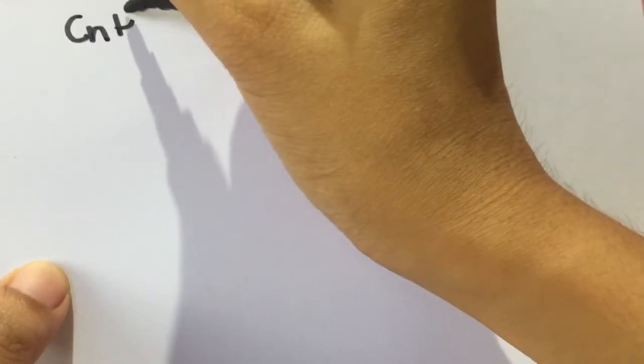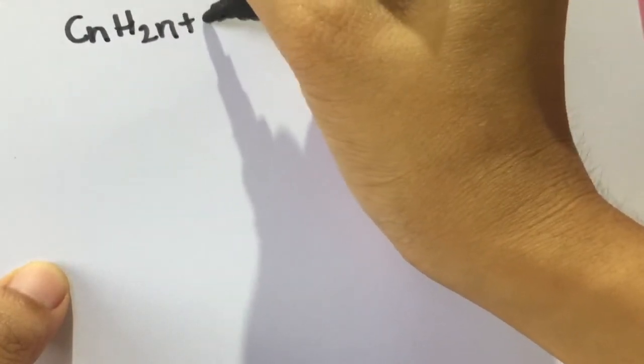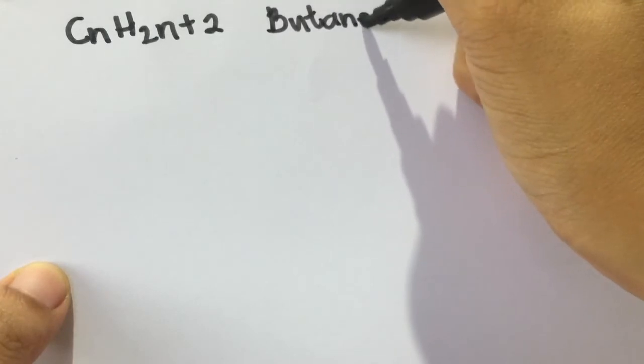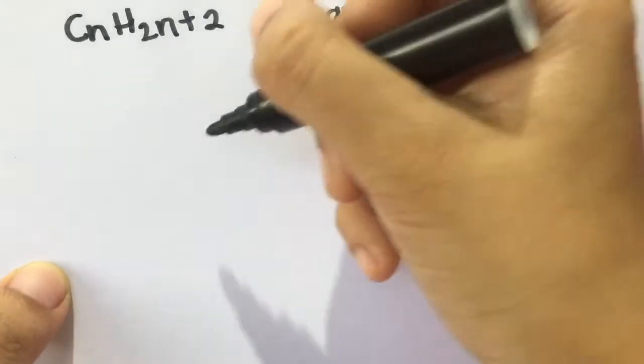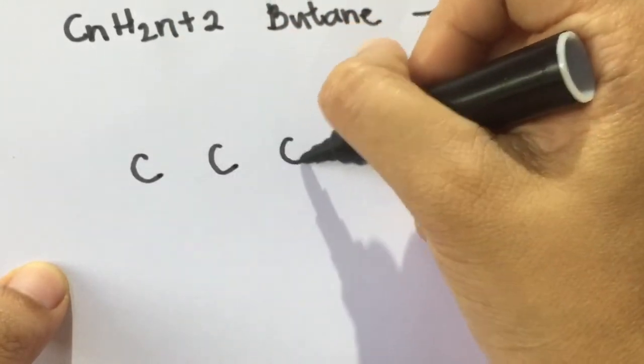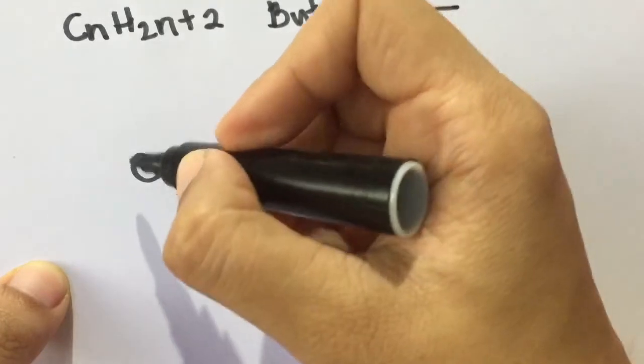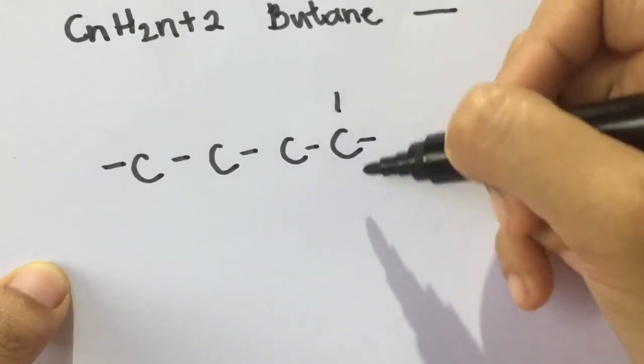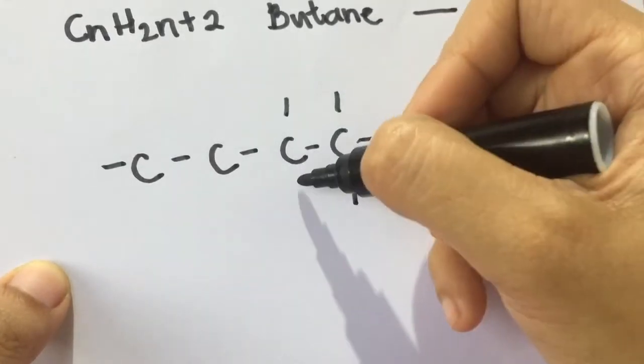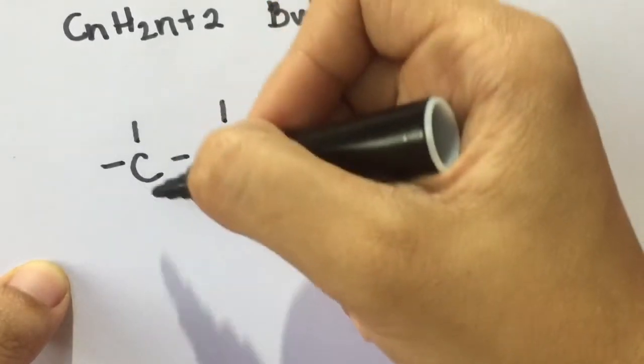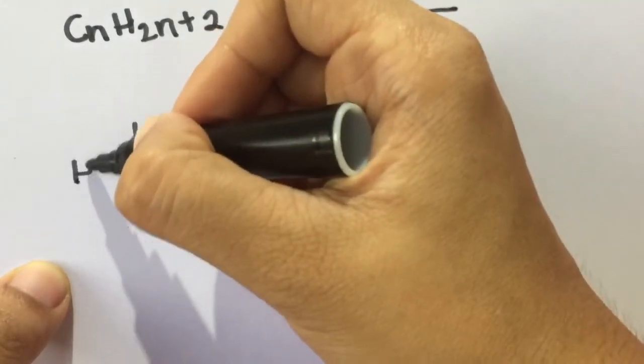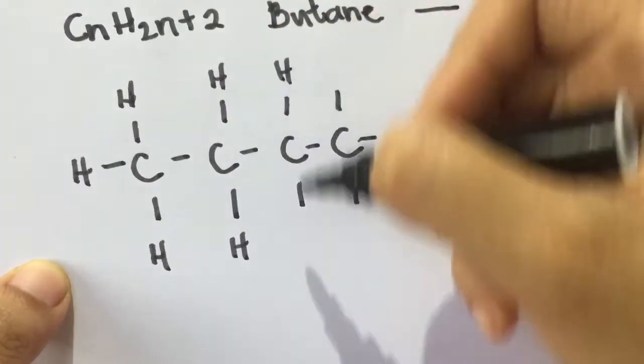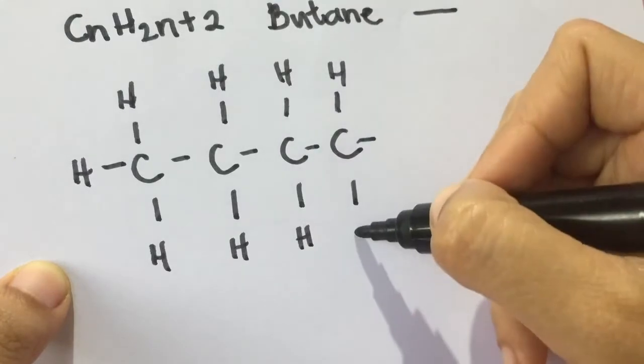We have here a formula of an alkane, CnH2n plus 2. Since we are going to use four carbons, so we're going to use the name butane with a single bond. First step, you have to draw the number of carbons: one, two, three, and four. And then, followed by the number of bonds. Please take note that a carbon can only be bonded by four valence electrons. Apat dapat. Remember that. Next, we are going to put hydrogen to emphasize the bond of carbon. H, H, H, and H.